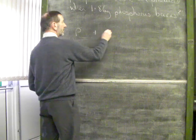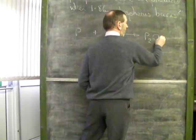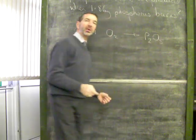When phosphorus burns, it turns into phosphorus oxide. Now, this is the formula for phosphorus oxide. You'll be given that.